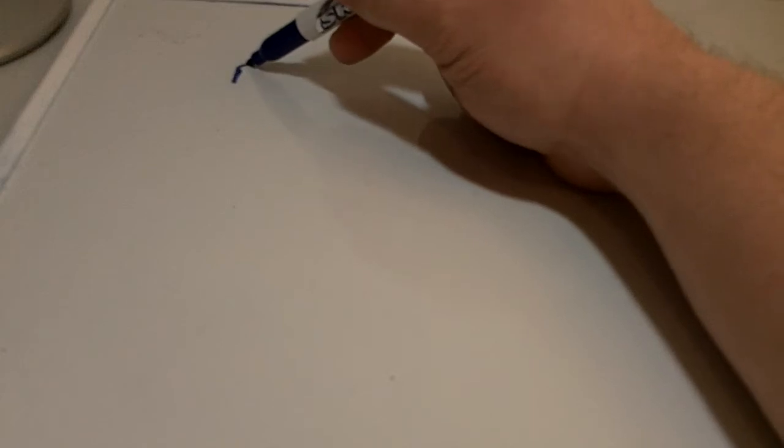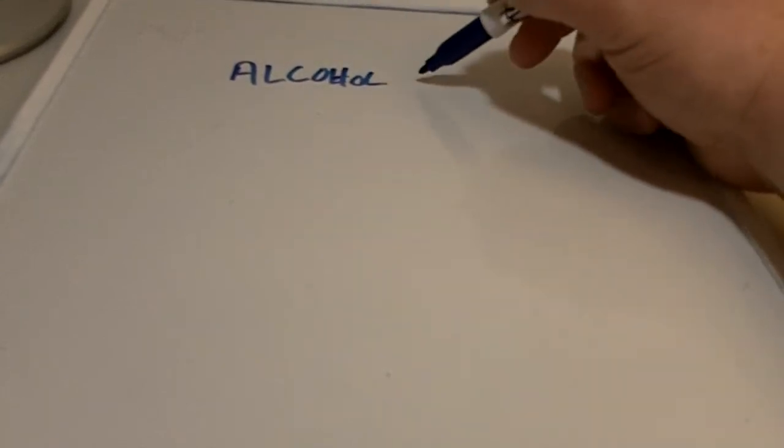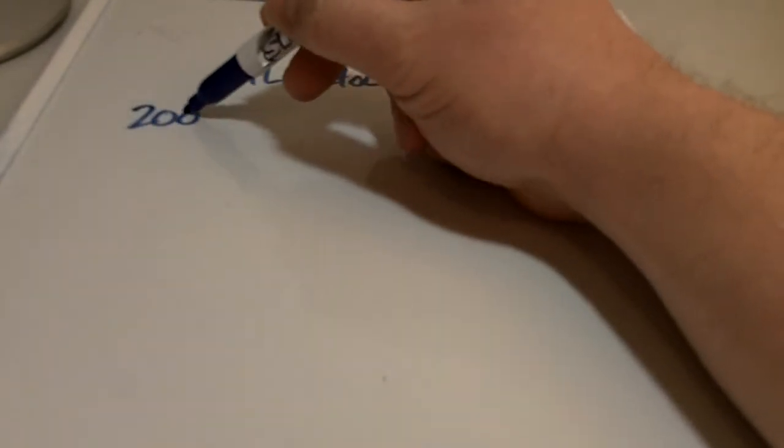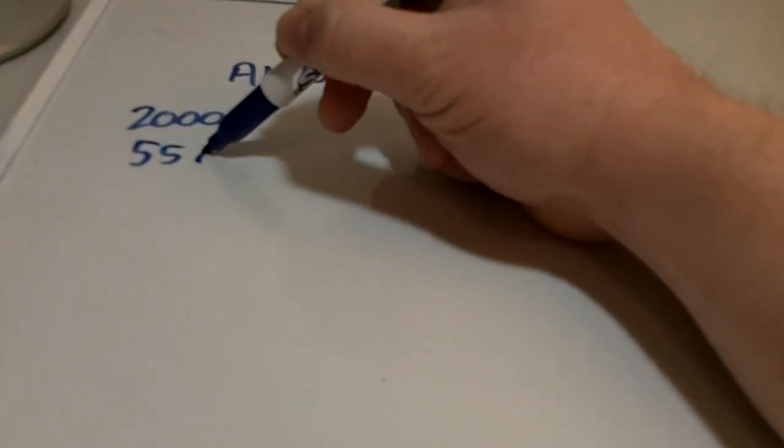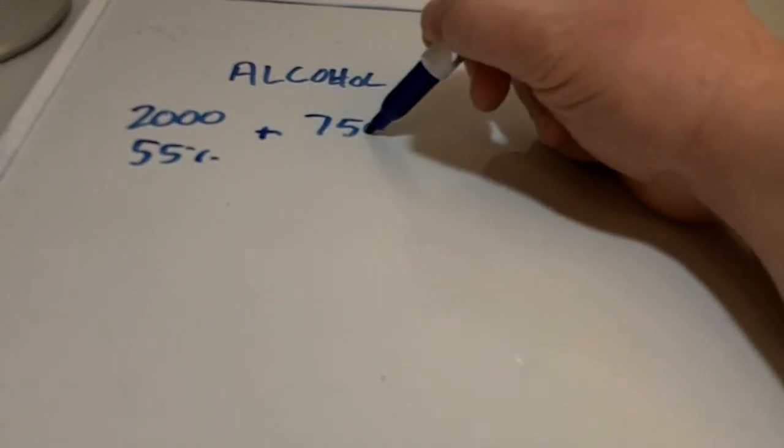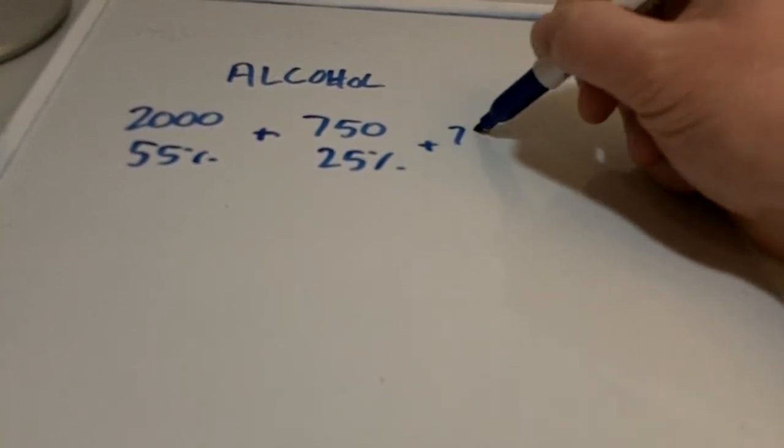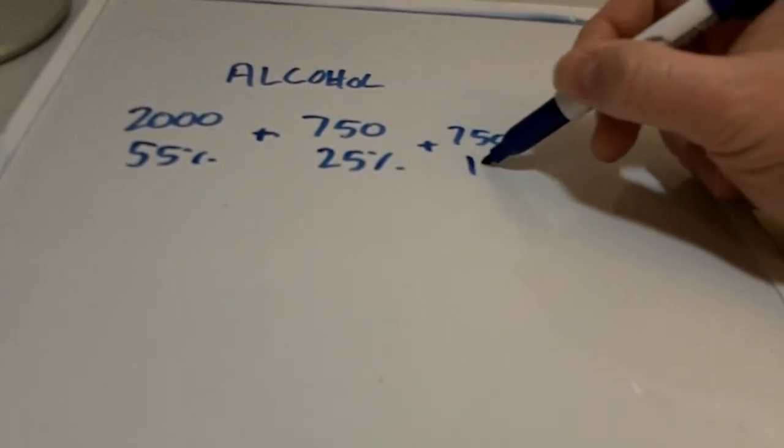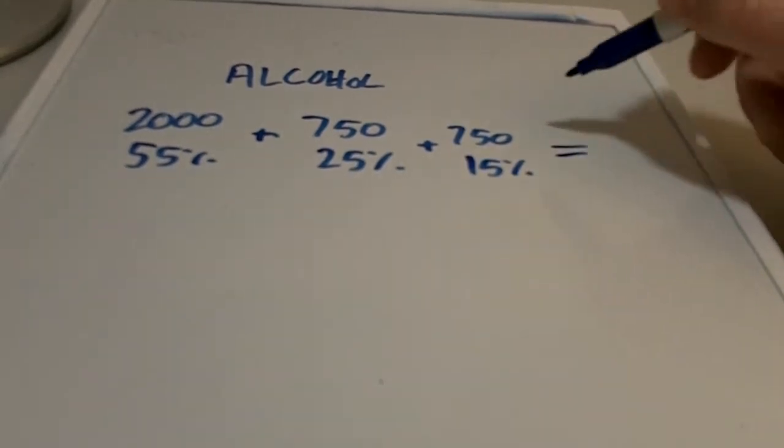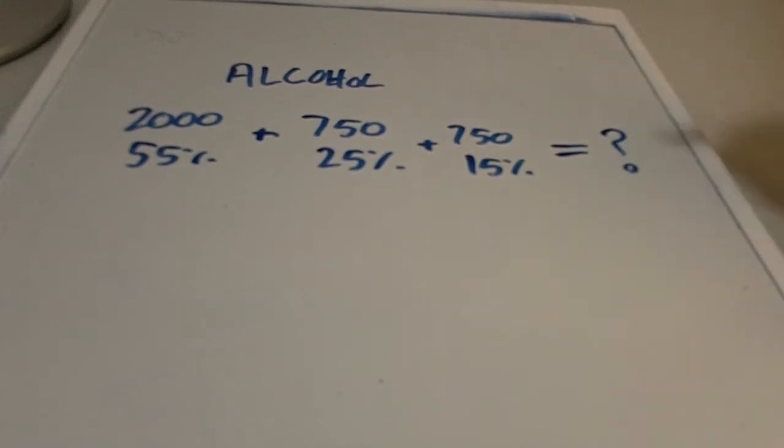15%. And then another example where you'd want to use an equation is, let's say that you have alcohol formulas. And you have 2000 milliliters of 55%, 750 milliliters of 25%, and then 750 milliliters of 15%. And you want to know, if you combine all of these together, what is that going to equal?